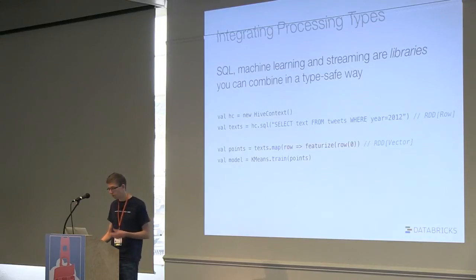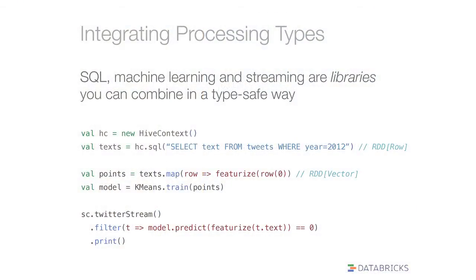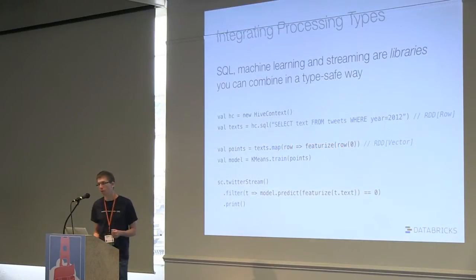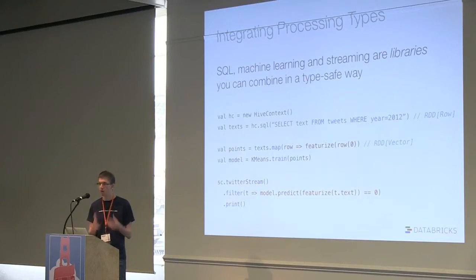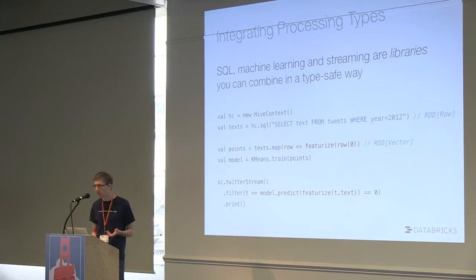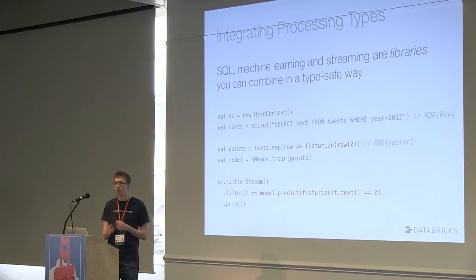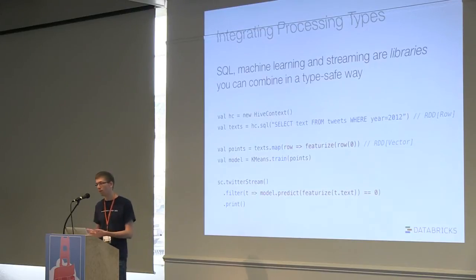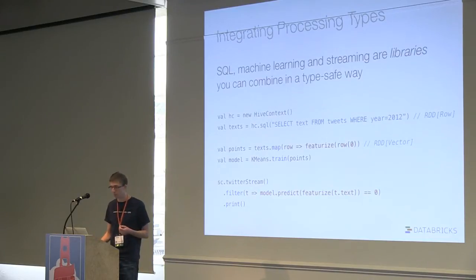Then you want to train a machine learning model — that's just a library function. Finally, you might want to take a stream, which is similar to an RDD but new data comes in over time, and use that model to filter out tweets matching cluster zero according to k-means clustering and print them out. This kind of thing in the past required installing two or three separate systems — one for SQL, one for machine learning, one for streaming — and figuring out ways to hook them together. Here they're just one program.